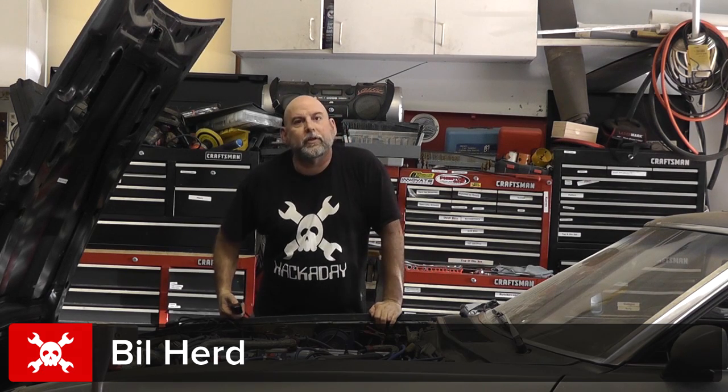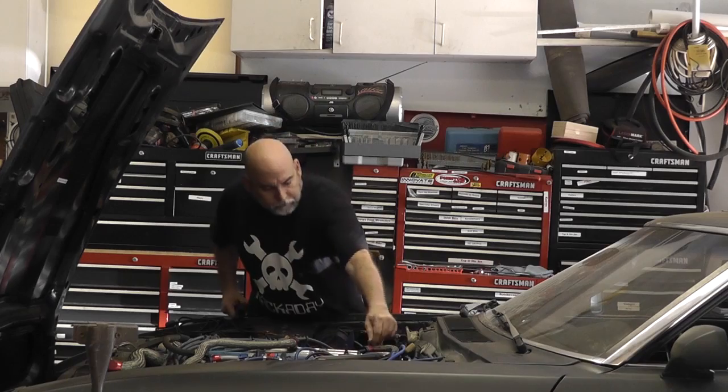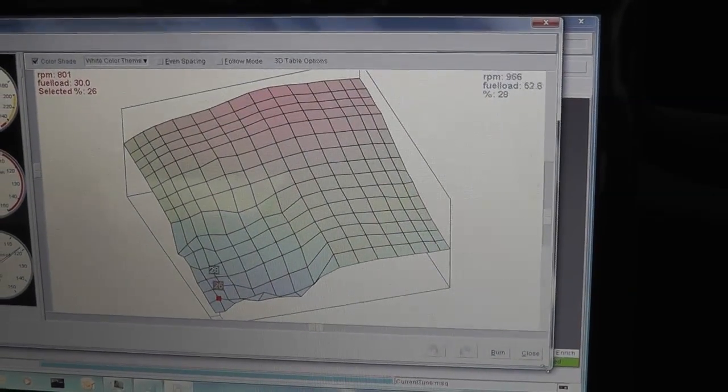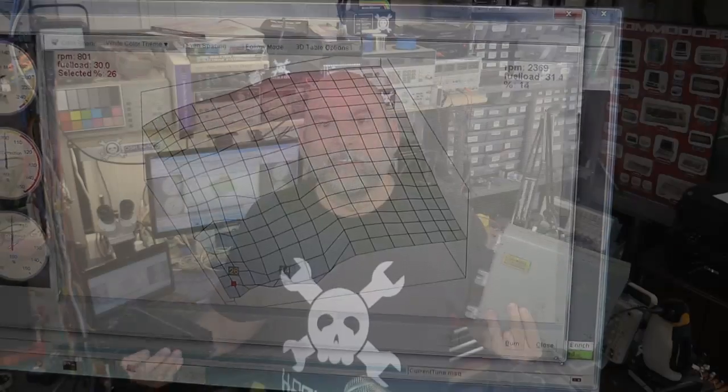Bill Hurd from Hackaday. Today I'm going to show you how I hacked my 1983 Datsun Z engine control unit. In case you couldn't hear me out in the garage there, I'm still Bill Hurd and this is still Hackaday.